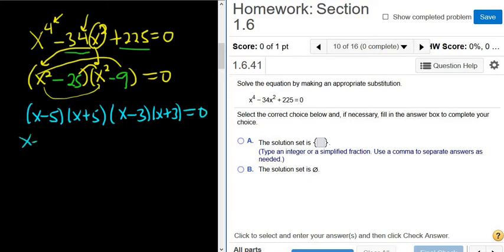Then you just set each factor equal to 0. I usually don't do this. I usually just go straight to the answers. But why not? And then you solve each one for x.